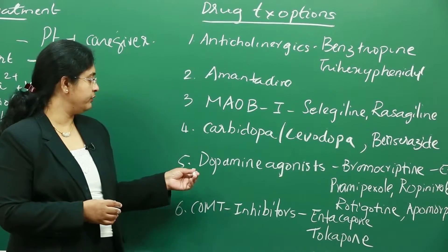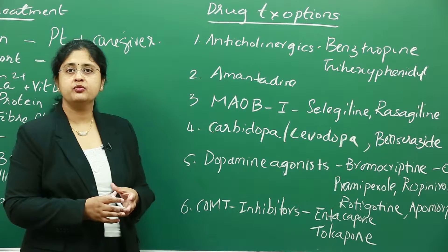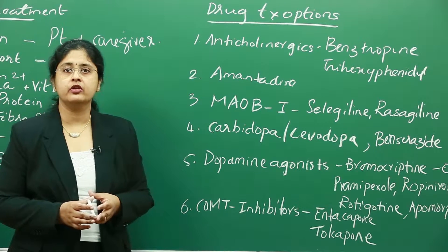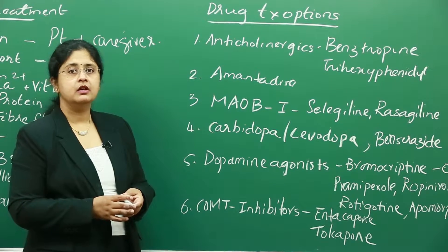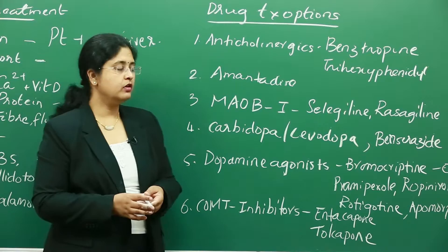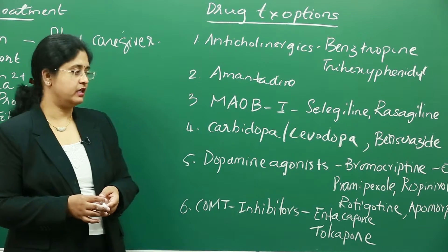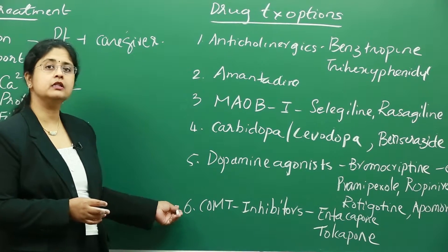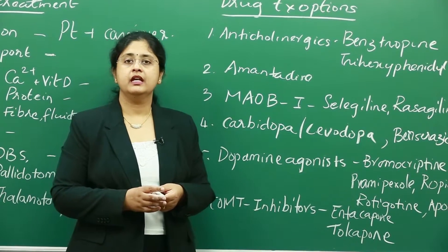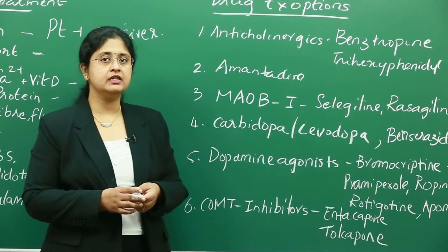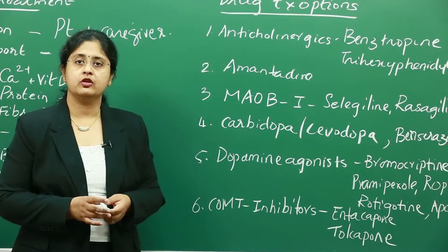Apart from carbidopa-levodopa, we also have dopamine agonists — both ergot-derived and non-ergot-derived. Examples include bromocriptine, pramipexole, ropinirole, rotigotine, and apomorphine, which is the rescue medication. Additionally, there is another very important class: COMT inhibitors, or catechol-O-methyltransferase inhibitors. Examples of these agents are entacapone and tolcapone.